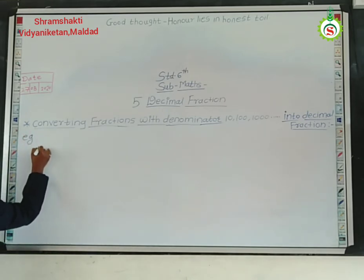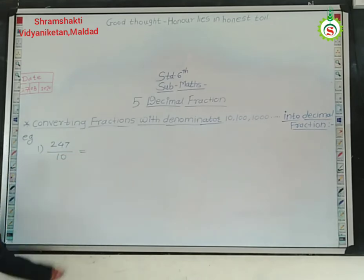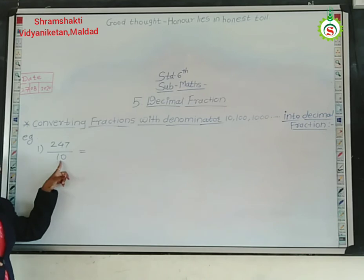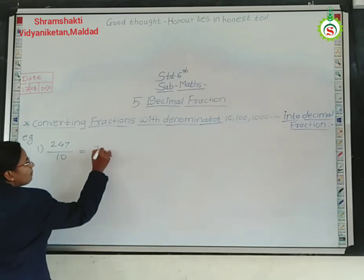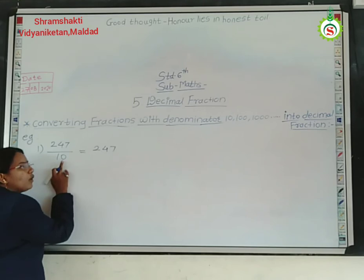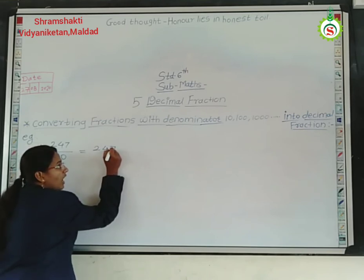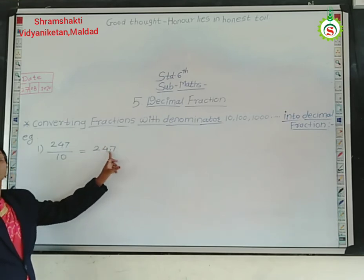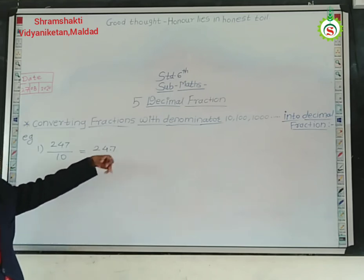First example: 247 divided by 10. In this type of example, the denominator is 10 and the numerator is 247. See here — how many zeros? Only one zero. So you write down the numerator number as it is, and since there is only one zero, you leave one place and after that one place you give the point. Because there is only one zero, leave only one place. So we get 24.7.